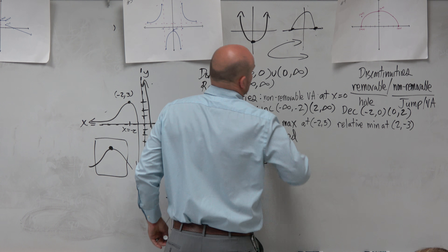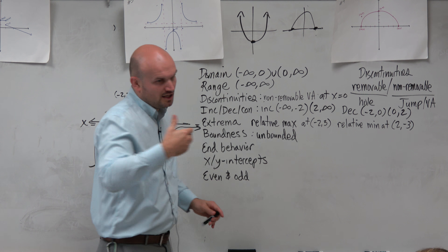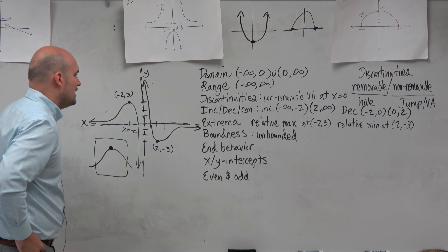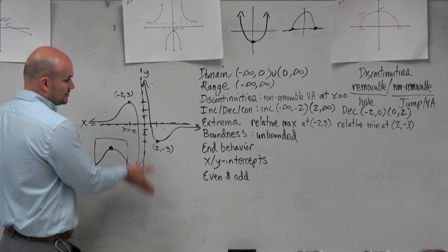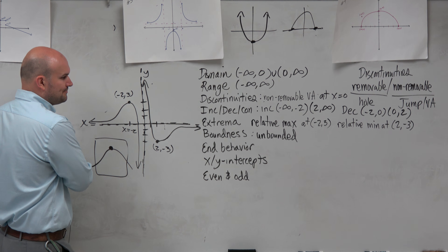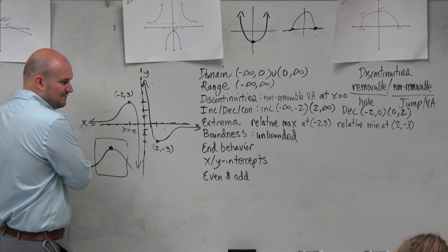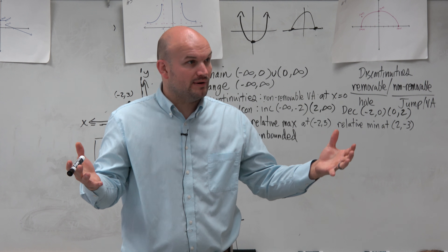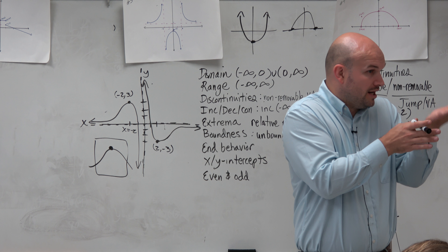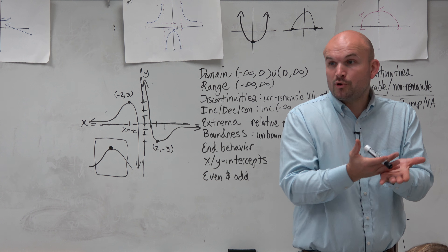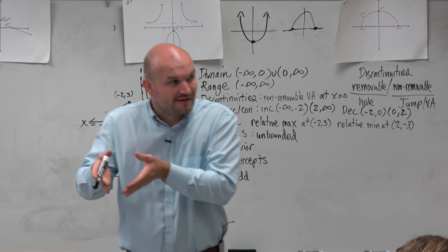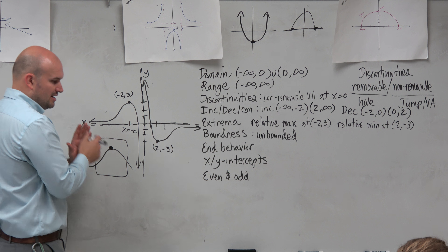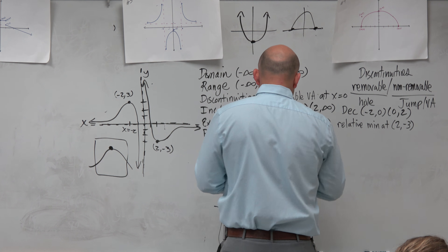What if this graph stopped right here? Is this now the lowest point of the whole graph? Yes. So there's relative min and max — which are min and maxes of a zoomed-in portion — and there's also absolute, meaning the absolute lowest or absolute highest. We don't have any absolute extrema in this case, but I wanted to mention that.